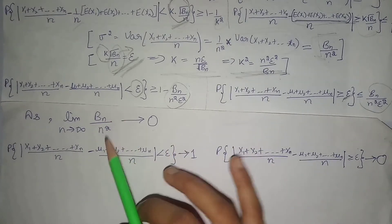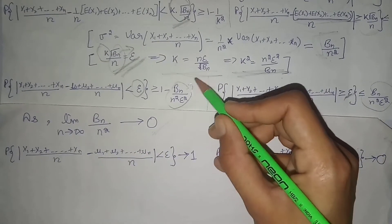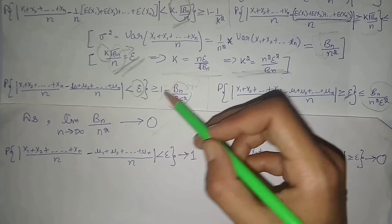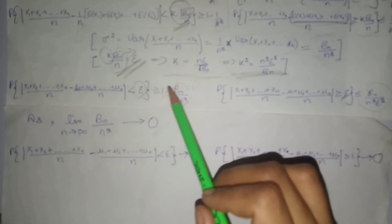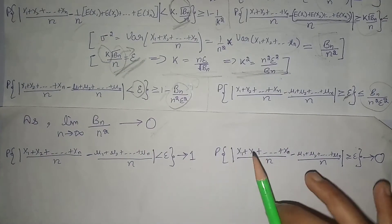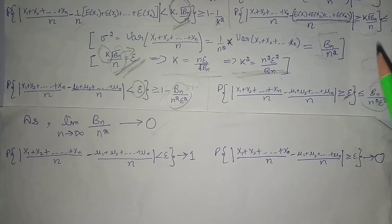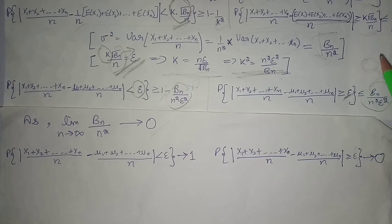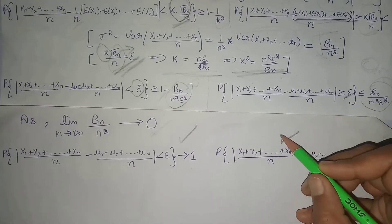Now, limit n approaches to infinity, bn divided by n square approaches to zero. This was already given in the statement of the weak law of large numbers. If this term equals zero, then here will be only one. They are saying that probability of this term is greater than one, which is not possible because the maximum value of probability is only one. That means this probability approaches one. Same on this side, when this term approaches zero, the right-hand side is zero. They are saying that probability of this term is less than this, less than zero. But the minimum value of probability is zero, that means this term approaches zero. So these are the two statements of weak law of large numbers which we have proved.